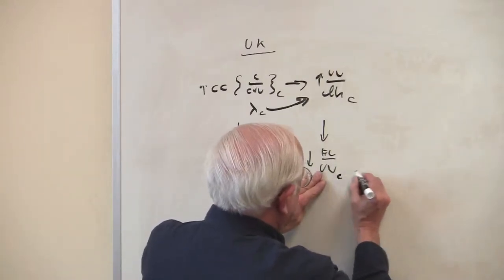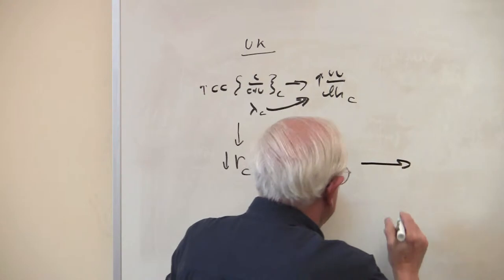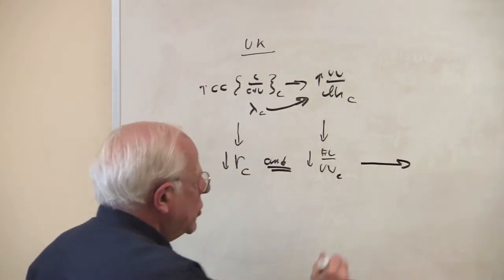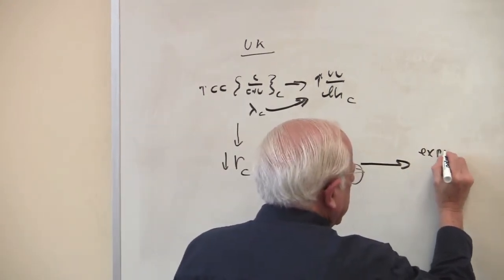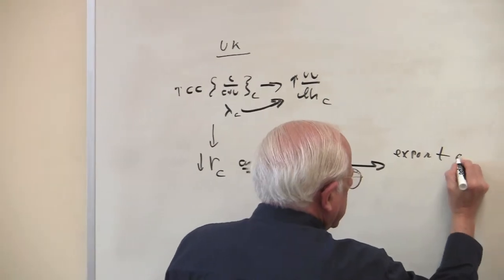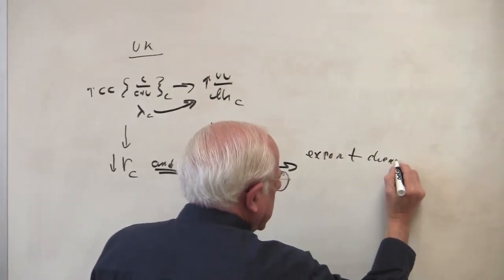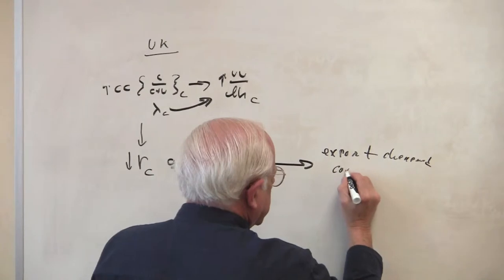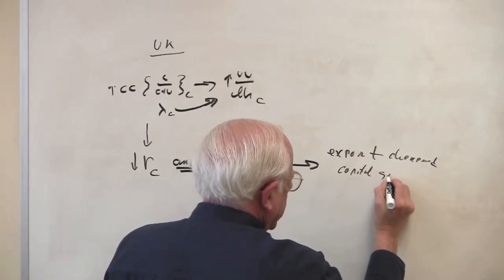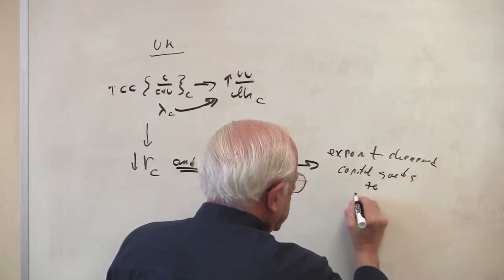This fall in fixed capital enables Britain to do what? To export cheapened capital goods to India.